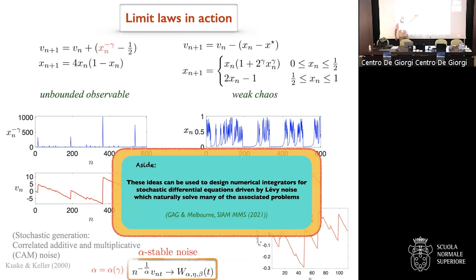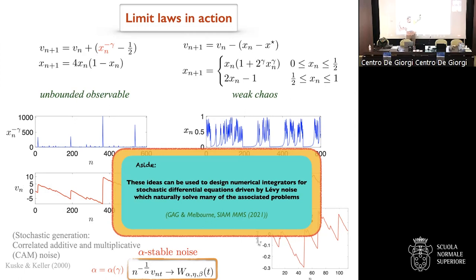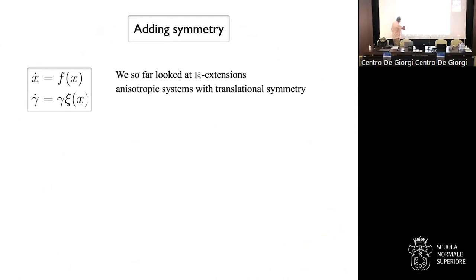As a side note: Ian and I used these ideas — mainly the unbounded observable mechanism — to construct a numerical integrator for an SDE driven by multiplicative alpha-stable noise. Rather than Taylor expansions, we view the SDE as a slow-fast limit system: the slow dynamics and the map serve as an integrator for the SDE. This naturally handles multiplicative noise. Happy to discuss offline.